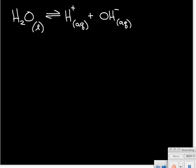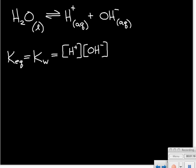Since it is at equilibrium, we can write an equilibrium expression for this, and it's a special one. We call it K sub W — it's really a K-eq, but we call it K sub W because it's for the auto-ionization of water. That is equal to the concentration of the hydrogen ion times the concentration of the hydroxide ion. We don't have to worry about the concentration of water because it is a pure liquid and is left out of the equilibrium expression.